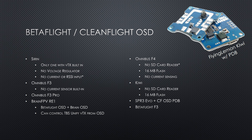The Sirin is the only one of these boards that has Betaflight OSD and a video transmitter built in. However, it doesn't have a voltage regulator, and it doesn't have current or RSSI input. The Omnibus F3 does not have a current sensor. This is fixed in the Omnibus F3 Pro, which has Betaflight OSD, an SD card reader, and a current sensor — all the things I could ask for.